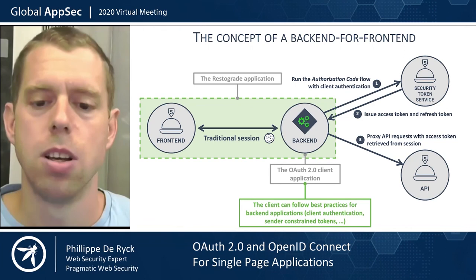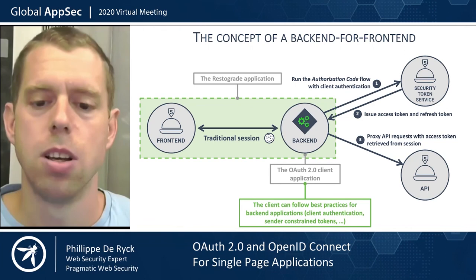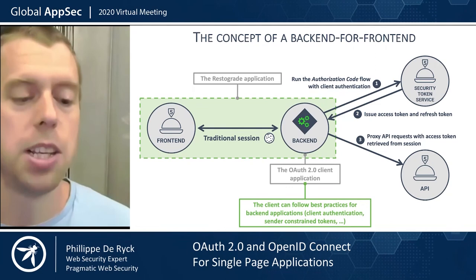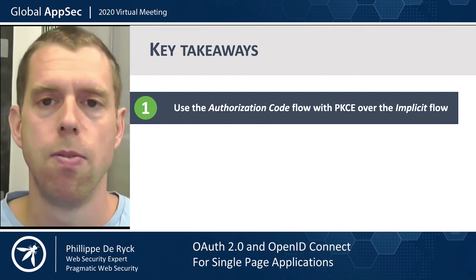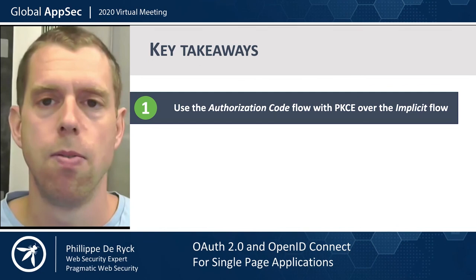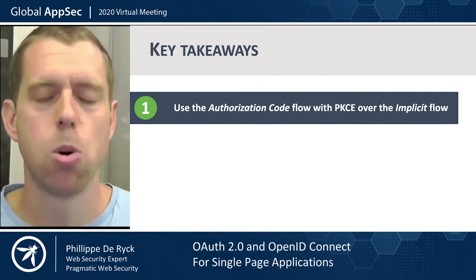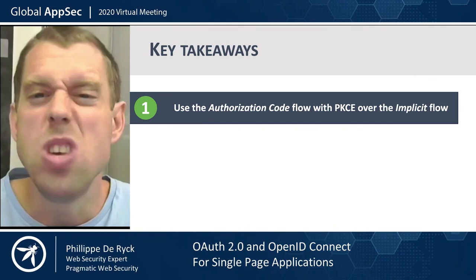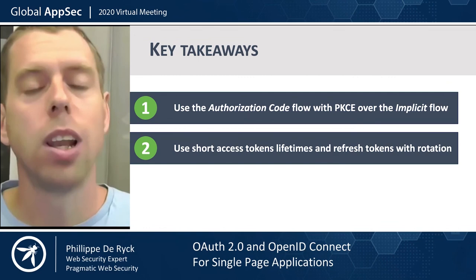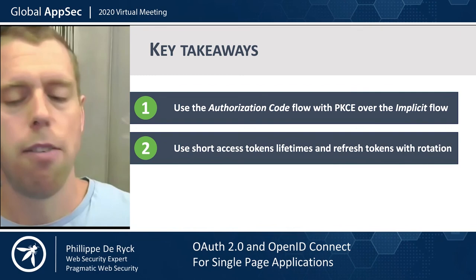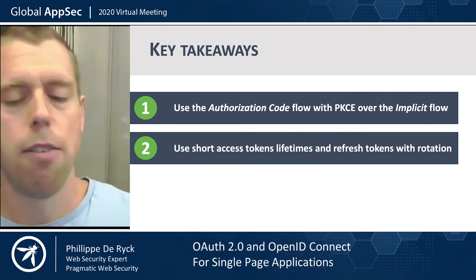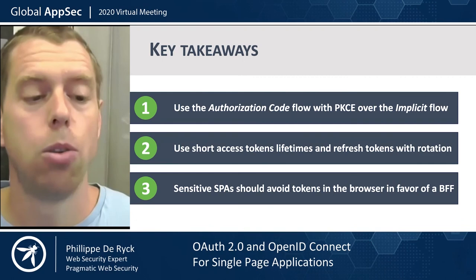This is the recommended best practice today for building sensitive SPAs dealing with APIs. That brings me to three key takeaways. First: use the authorization code flow with PKCE over the implicit flow — if you have a new project it's a done deal, and if you have an existing project with the implicit flow, look into upgrading, especially if you're using an SDK since the details will be hidden. Second: use short access token lifetimes — five to ten minutes — and rely on refresh tokens with refresh token rotation to obtain new ones. Third: for sensitive applications dealing with sensitive data or high-value transactions, avoid tokens in the browser altogether and build a BFF which handles tokens.